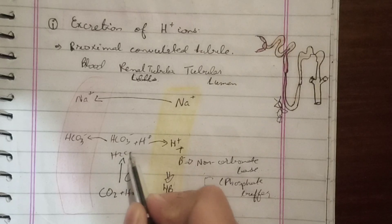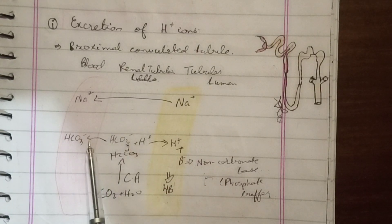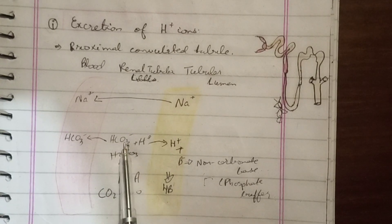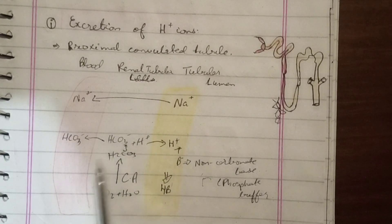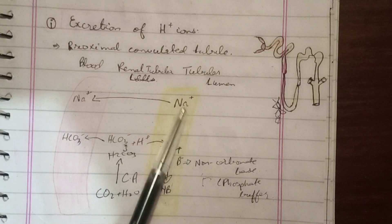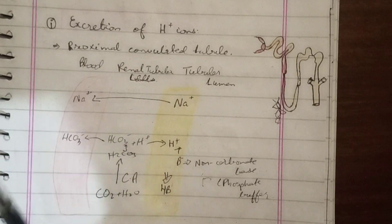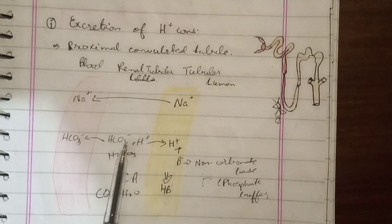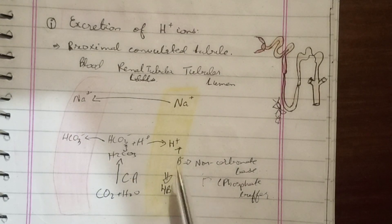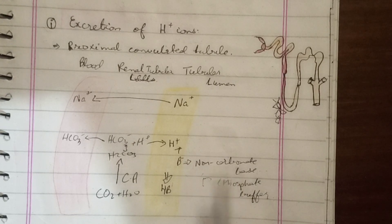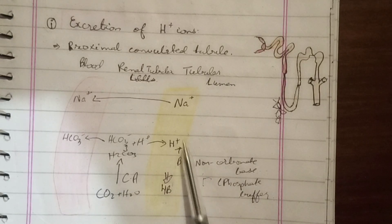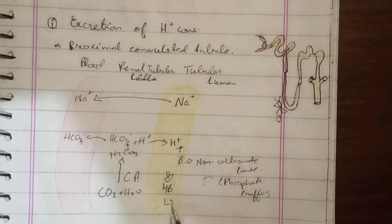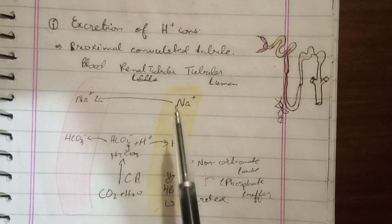H2CO3 is made and further dissociates into bicarbonate and hydrogen ions. The hydrogen ions are secreted into the urine, while sodium is retained into the blood to maintain electrical neutrality. The hydrogen ions in the urine are also buffered by non-carbonate bases and phosphate buffers, which bind with hydrogen ions and then excretion occurs.